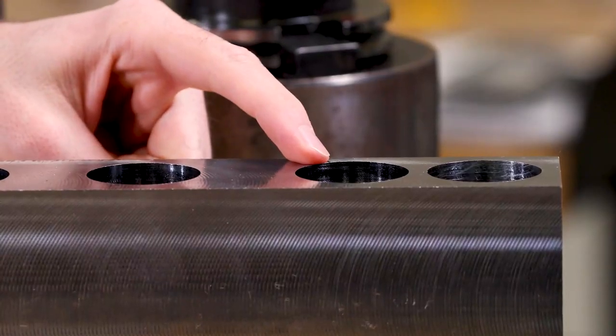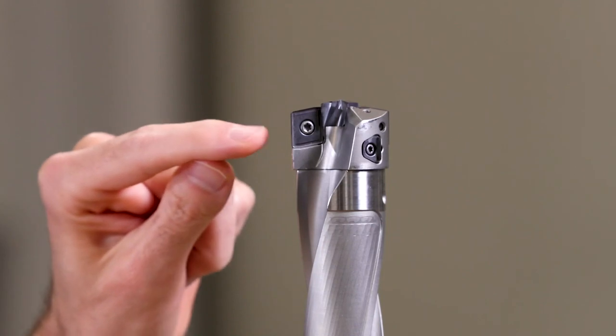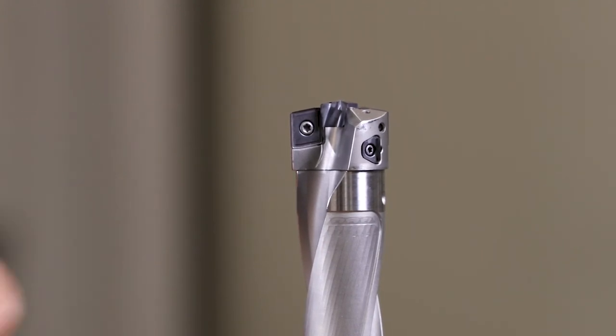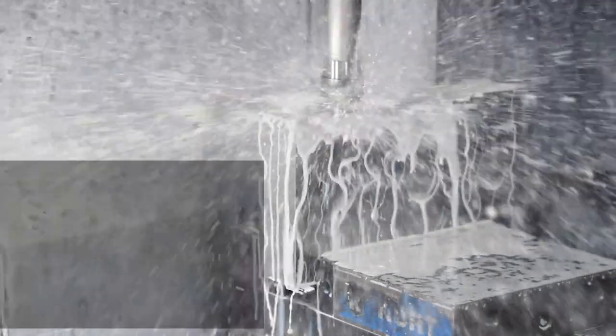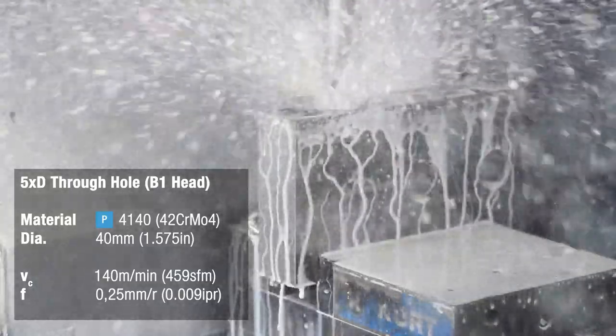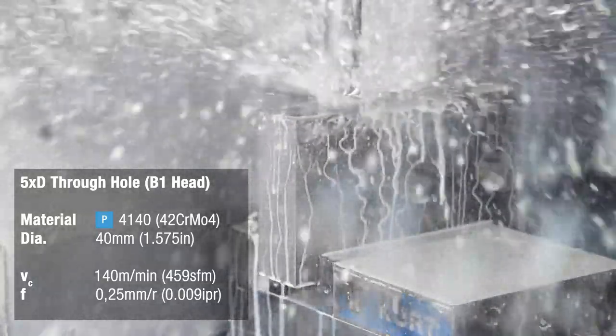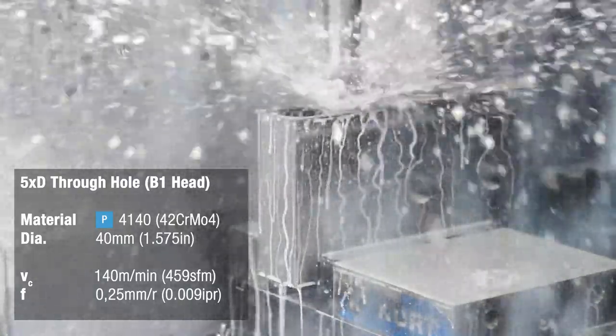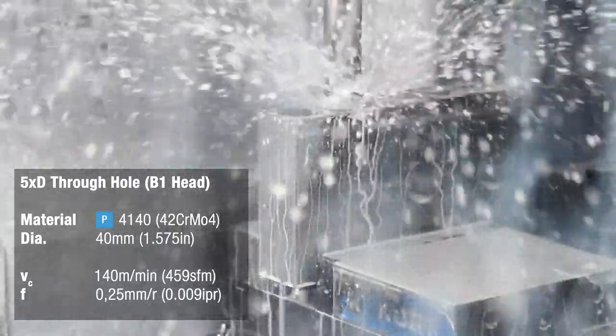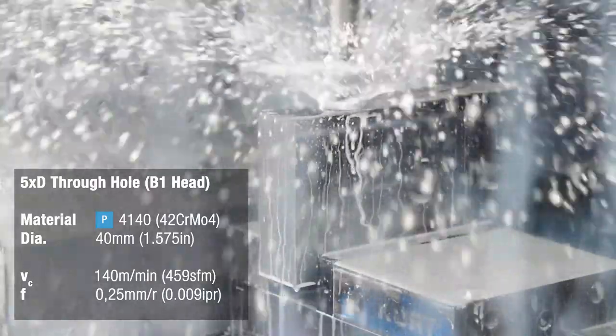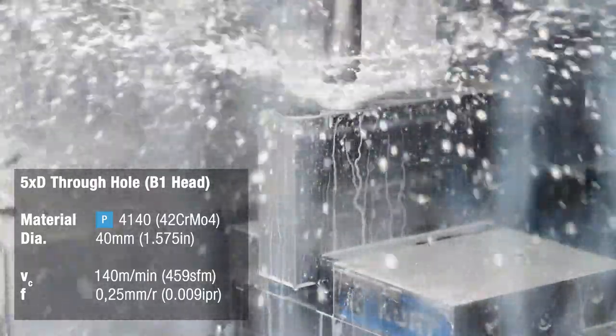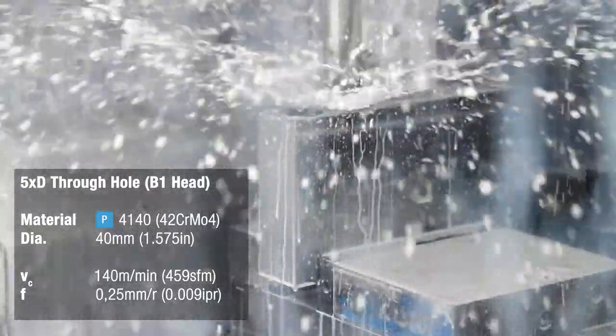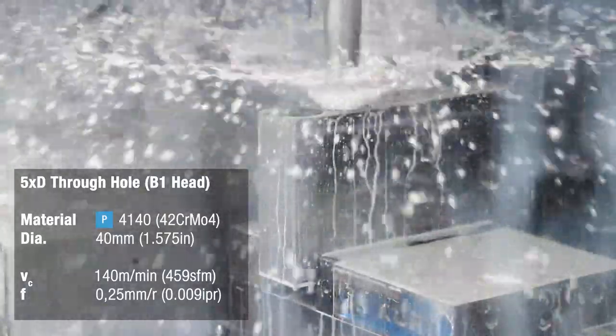We're drilling a second through hole next, this time with the B1 head. We're using the same exact drill body but we're replacing the A1 head against the B1 head. One of the many benefits of this modular drill system is the capability to apply different head styles to the same drill body but also different head diameters adapt to the same drill body. For those reasons the KSEM Plus is a very cost-effective drilling system.